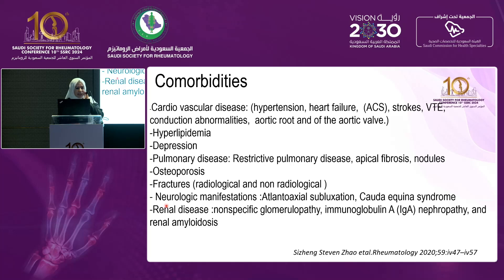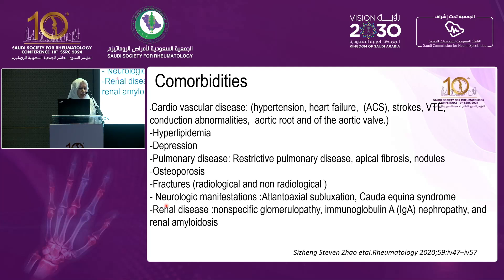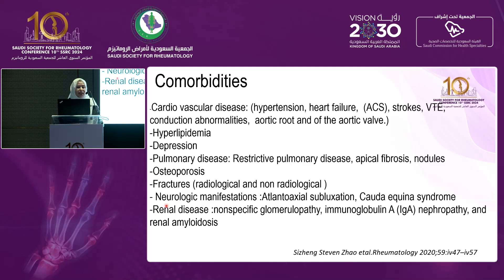If left untreated, the disease is associated with many comorbidities, including cardiac involvement in the form of inflammation of the aortic root and aortic valve, heart failure, and hypertension. Patients are also more susceptible to metabolic syndrome and depression. The lung is affected in the form of apical fibrosis, and patients may develop restrictive pulmonary disease, osteoporosis, and fractures from immobility. Neurological manifestations include cauda equina syndrome and atlanto-axial subluxation, and rarely renal amyloidosis.